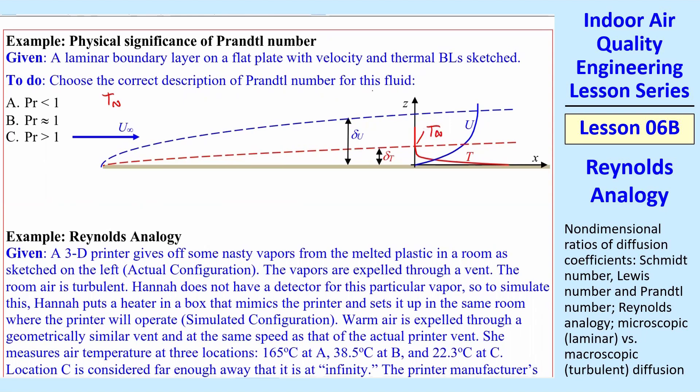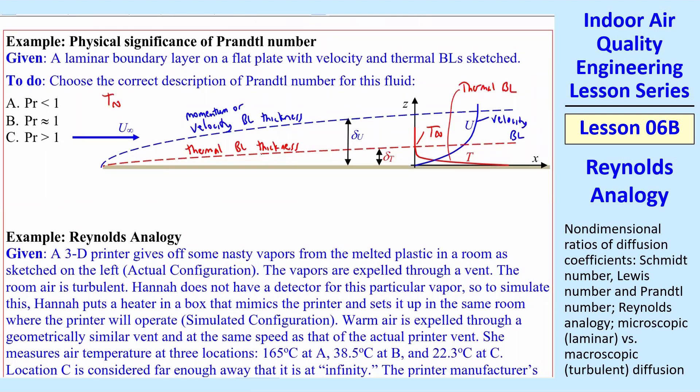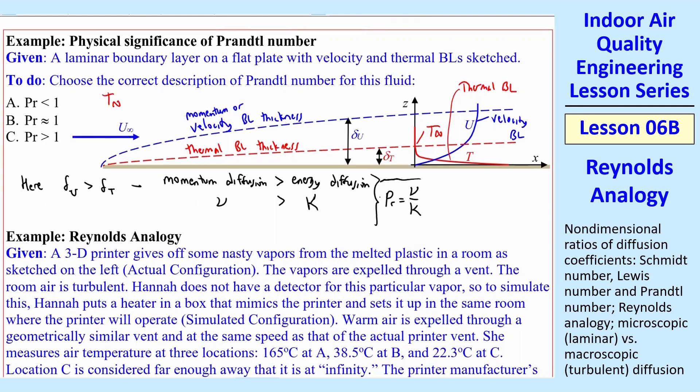So the question is, which Prandtl number is this: less than one, equal to one roughly, or greater than one? And so here we can see that delta sub u, which is the velocity boundary layer thickness, is greater than delta sub T, the thermal boundary layer thickness. So that means that momentum diffusion is greater than energy diffusion, which then means that nu is greater than kappa. And remember, the heavier kappa is on the bottom, so Prandtl number is nu over kappa, and if nu is greater than kappa, then Prandtl number is greater than one. So C was the correct answer.